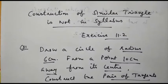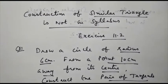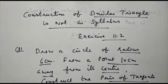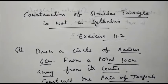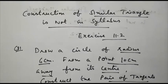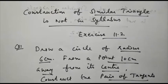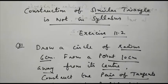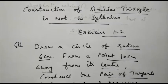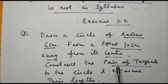From Exercise 11.1, construction of similar triangles is not in the syllabus. From 11.1, only one topic — how to divide a given line segment in a given ratio — we have to do. Similar triangles construction is not in syllabus. So next we move to Exercise 11.2.